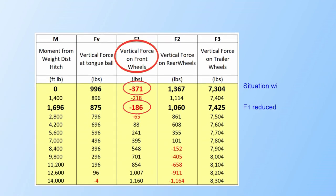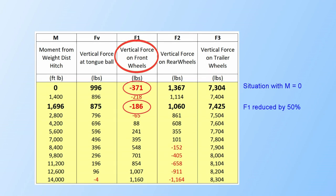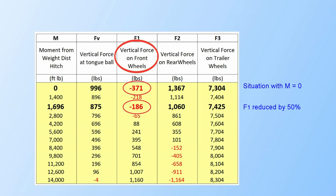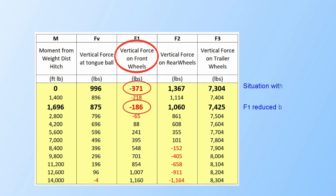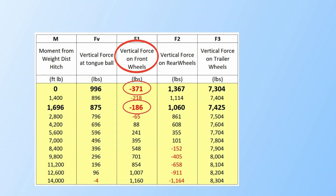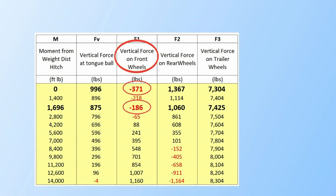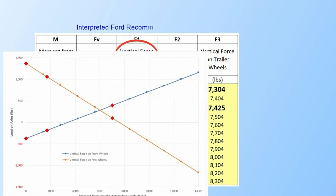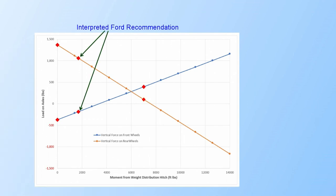Recall the front axle load with no weight distribution applied was minus 371 pounds. Assuming movement is proportional to load applied suggests the ideal delta front axle weight would be minus 186 pounds. This occurs with a moment of 1696 foot-pounds applied. We can also see this on the plot of axle loads.